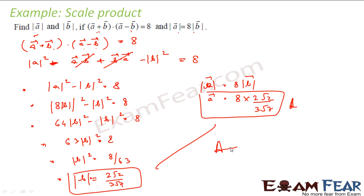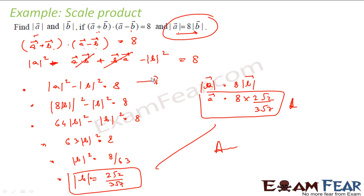Not that difficult. We found that A dot B and B dot A got cancelled. We got an equation in terms of magnitude of A and magnitude of B, and we also had a relation between magnitude of A and B. Using these two equations, we found the values of magnitude of A and magnitude of B.